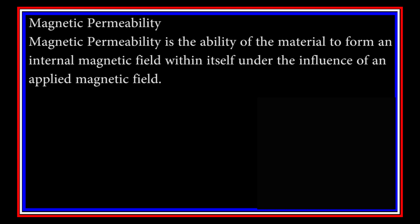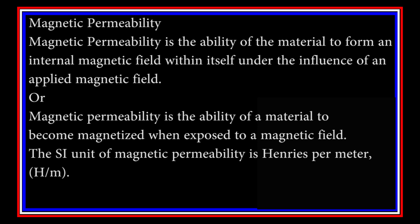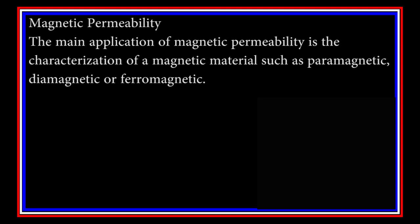Magnetic permeability is the ability of a material to form an internal magnetic field within itself under the influence of an applied magnetic field. Or: magnetic permeability is the ability of a material to become magnetized when exposed to a magnetic field. The main application of magnetic permeability is the characterization of magnetic materials such as paramagnetic, diamagnetic, or ferromagnetic.